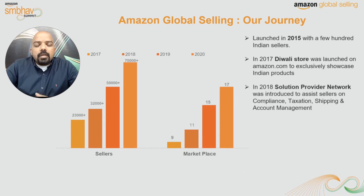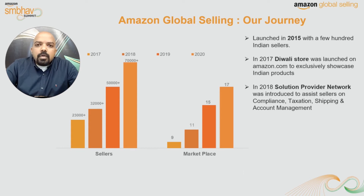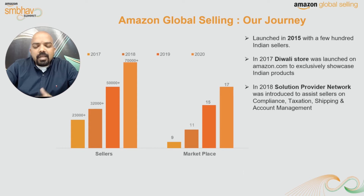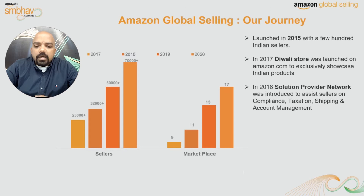The next milestone: in 2018 we enabled the Service Provider Network, also known as SPN. The SPN is a network of third-party service providers. It provides a facility so that sellers can easily identify and avail services from these partners — services with respect to compliance, taxation, shipping, account management, and all other elements related to global selling. It is a simple-to-use portal that enables easy identification and utilization of these services.